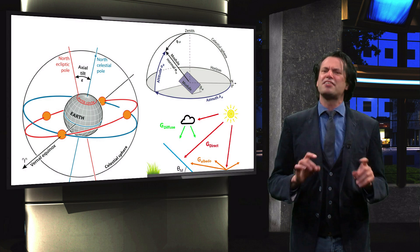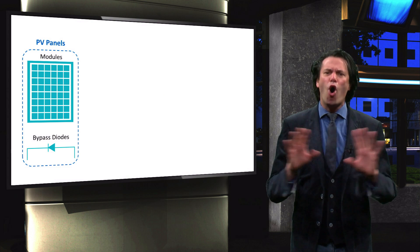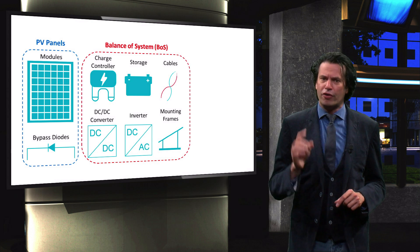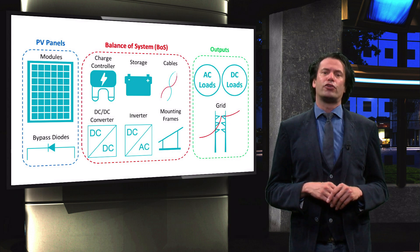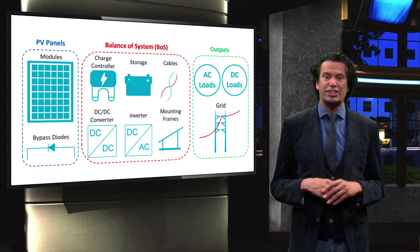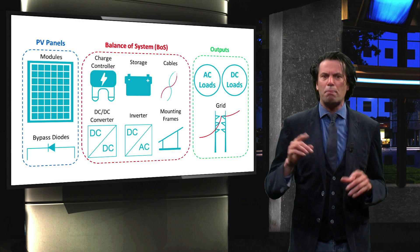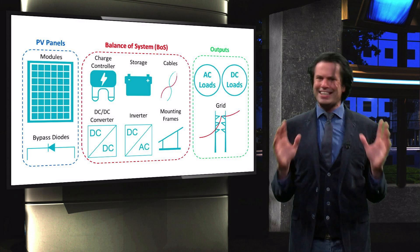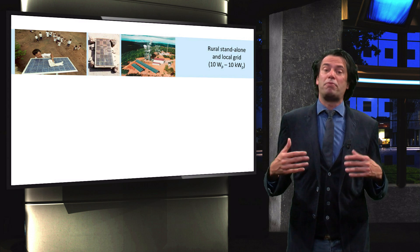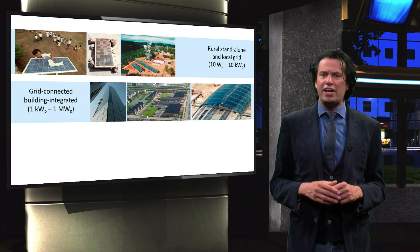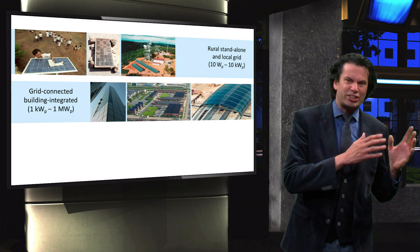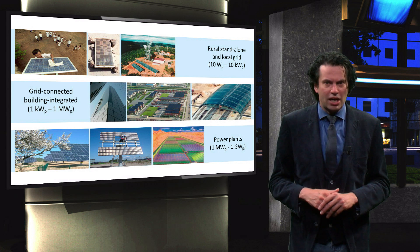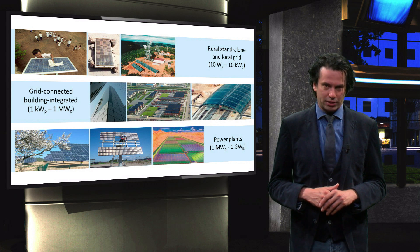You will create an in-depth understanding of all the components required to design a PV system, including inverters, DC converters, batteries, charge controllers and cables. You will also learn about the economics of PV systems. After taking this course, you will be able to design a PV system for any scale, ranging from rural stand-alone systems to grid-connected residential rooftop systems and utility-scale solar power plants.